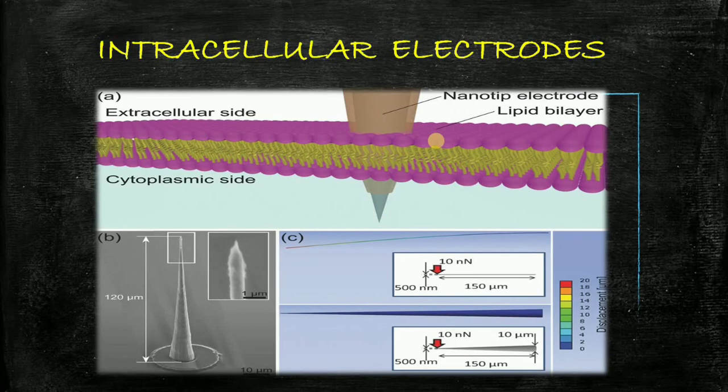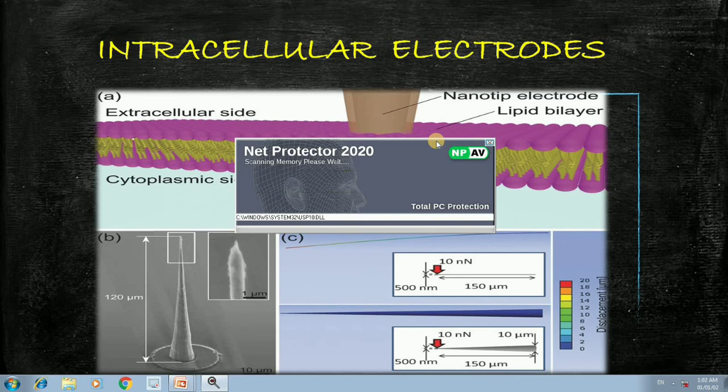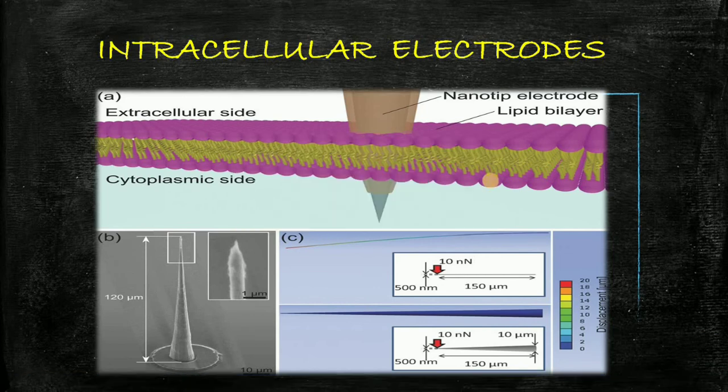Next is intracellular electrodes. These are extremely fine electrode with a diameter of 0.5 micrometer. It is used to record the potential changes inside the membrane across a cell. You can see in this picture there is a needle electrode which is intracellular electrodes. It is used to record electrical activity from inside the cell.